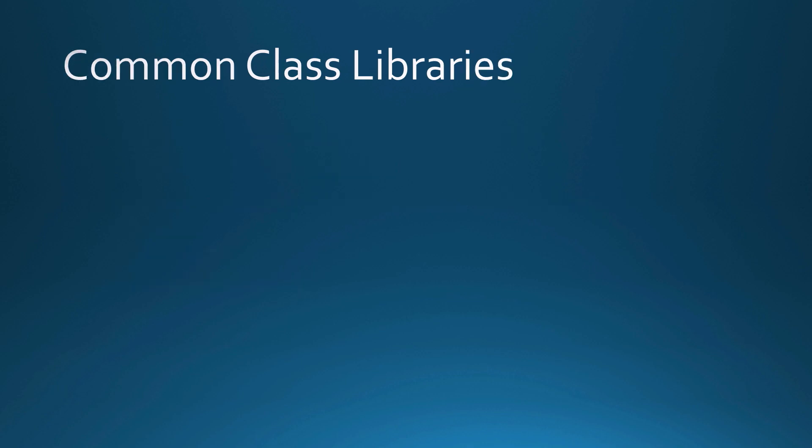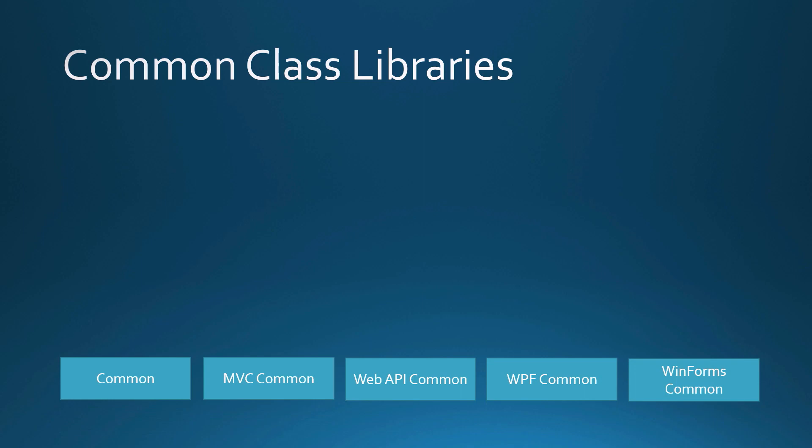What kind of class libraries will you typically create? I like to break my class libraries up into a common, an MVC common, a Web API common, a WPF common, and a WinForms common. Depending on the kind of application I'm building, I would use one or many of these different assemblies.